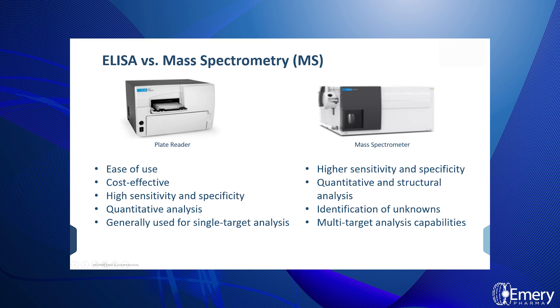ELISAs are normally used for single-target analysis, but if multiple-target analysis is needed, mass spectrometry can be preferable. Mass spectrometry can provide very detailed structural information, including composition, modifications, and interactions of the molecule of interest, as well as identification of unknown molecules and quantitation. Thank you for watching.